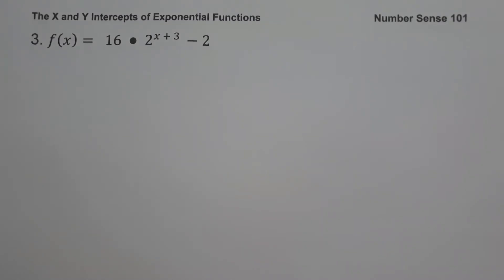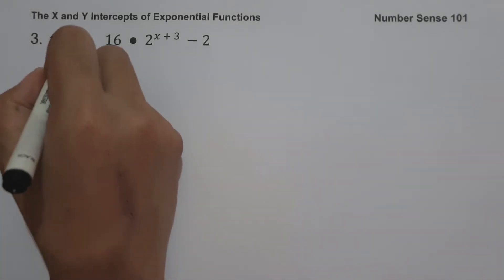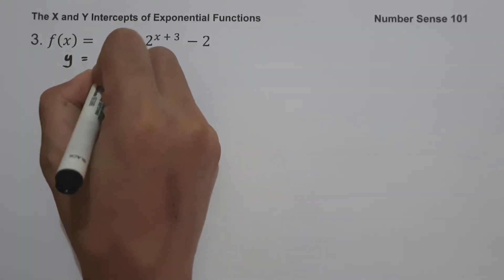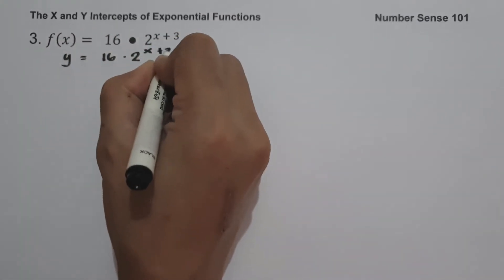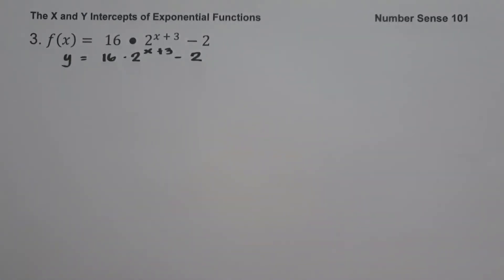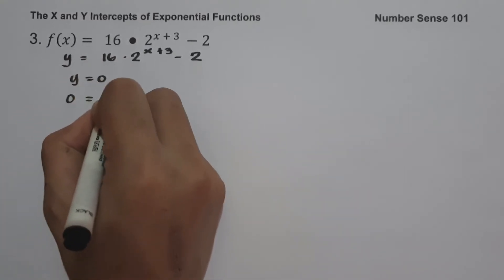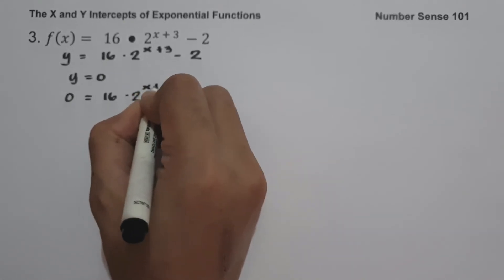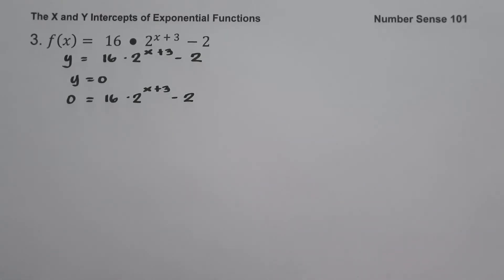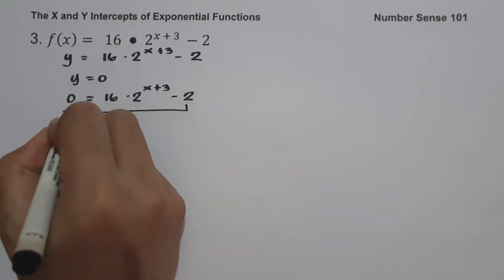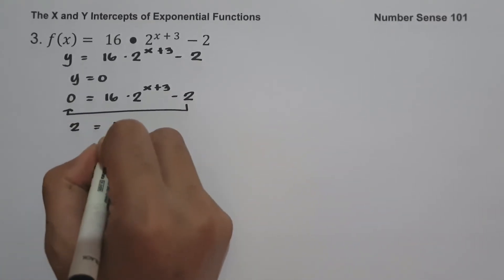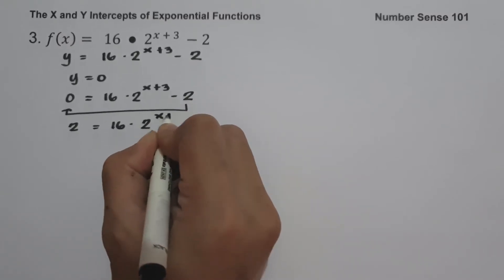On example number 3, f(x) equals 16 times 2 raised to x plus 3 minus 2. Changing f(x) into y: y equals 16 times 2 raised to x plus 3 minus 2. To find the x-intercept, let us set y equal to 0: 0 equals 16 times 2 raised to x plus 3 minus 2. We will show two different solutions. First, move negative 2 to the side of 0, giving us 2 equals 16 times 2 raised to x plus 3.